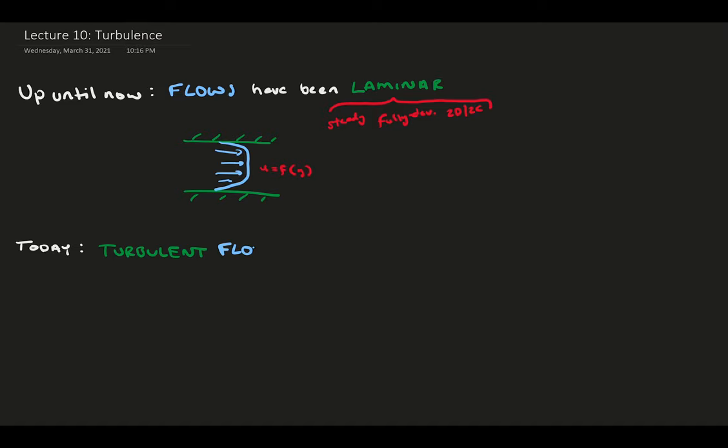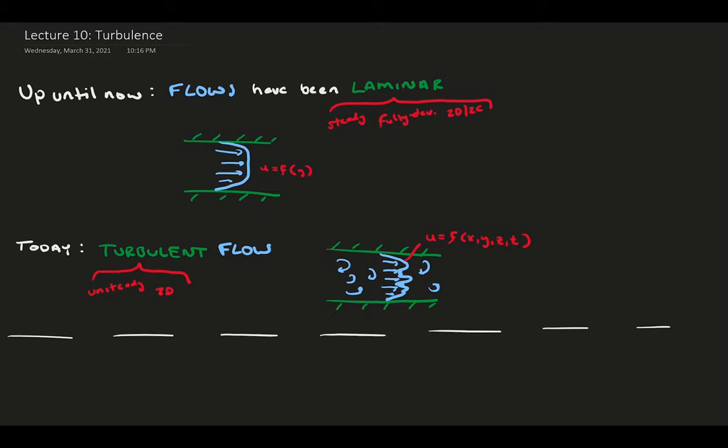Turbulence is a mess — it's unsteady, three-dimensional, and at any instant the flow can appear to be chaos. We will explore the physical nature of turbulent flows, how to know when our flow is turbulent, and how to predict the behavior. Let's jump right in.